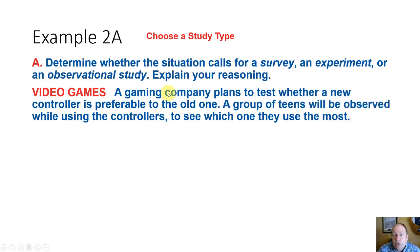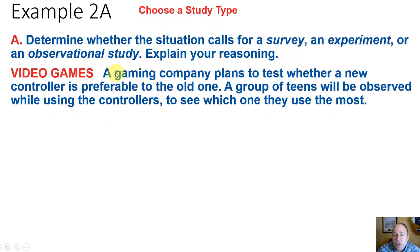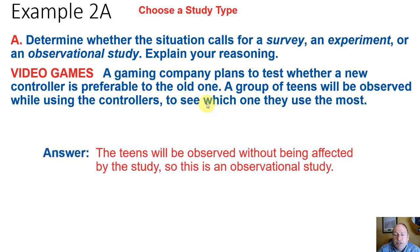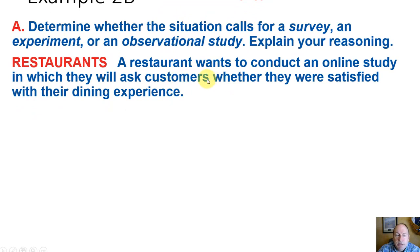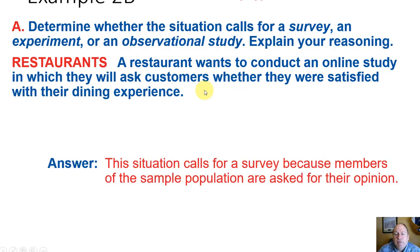Let's look at what type of study we should do for a particular situation. A gaming company plans to test whether a new controller is preferable to the old controller, and a group of teens will be observed while using the controller to see which one they use the most. Since we're just observing them and not changing controllers or affecting the situation, this is an observational study. Separately, a restaurant wants to conduct an online study asking customers whether they were satisfied or not satisfied with their dining experience — this is a survey because we're sampling a population based on their opinion.